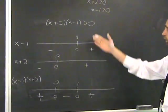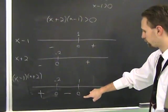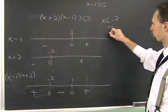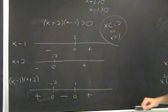So you just look at the chart. Say, all right, where is this greater than 0? It's greater than 0 where x is less than minus 2, or where x is greater than 1. So that's the final thing.